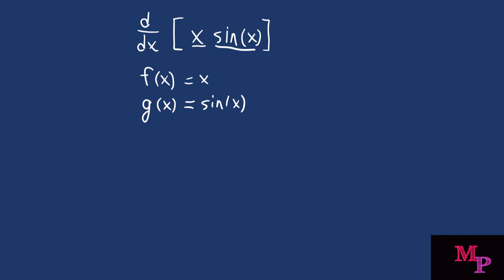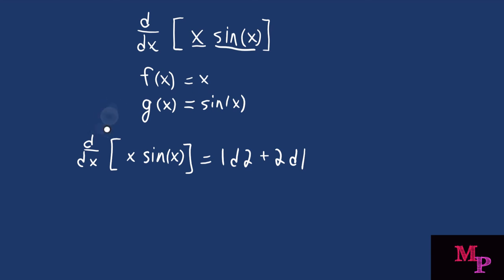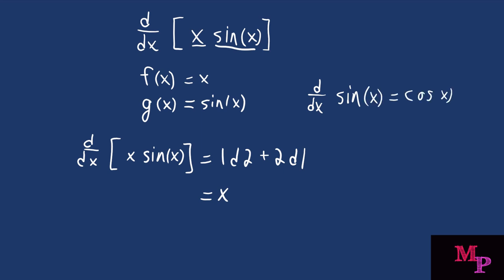Remember the rule: 1d2 plus 2d1. So we apply: one is your first function, which is x; d2 is the derivative of your second function — the derivative of sine is cosine — so d2 is cosine of x.